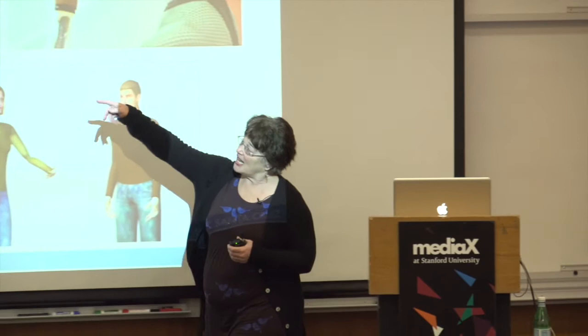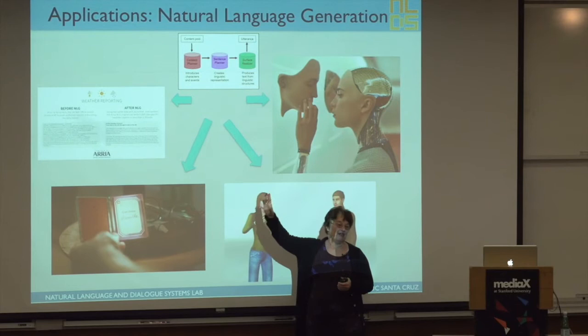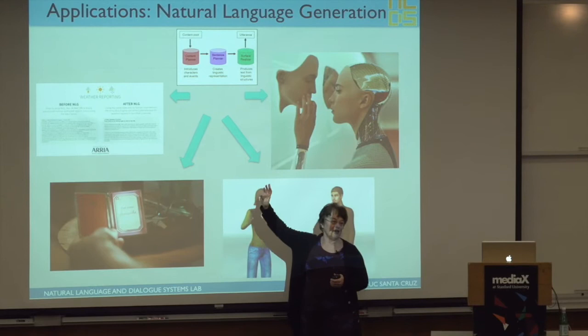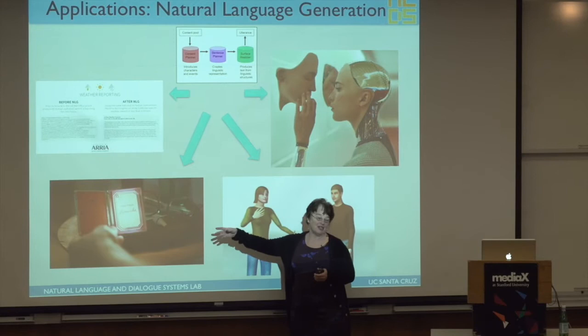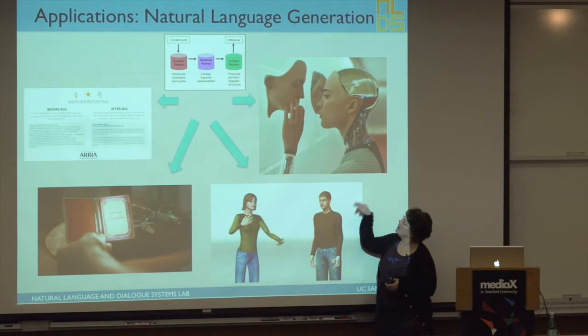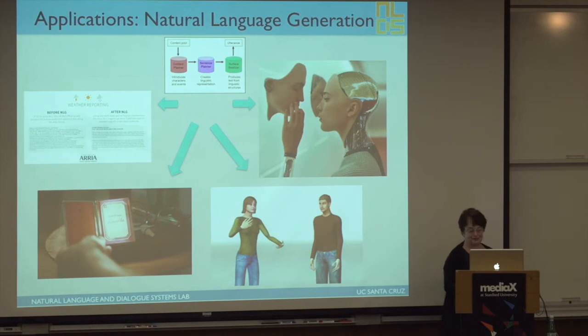A classic application area for natural language generation is report generation — you have a database of information and you want to generate some kind of narratively structured text or report from it. That's where a lot of business applications are. But then we've seen films and ideas like Siri and social interaction with agents. The work I'm going to talk about today is trying to develop technology that can generate from a deep representation and actually have some kind of social presence.